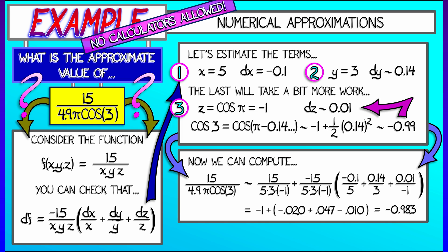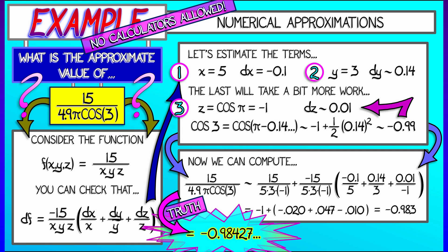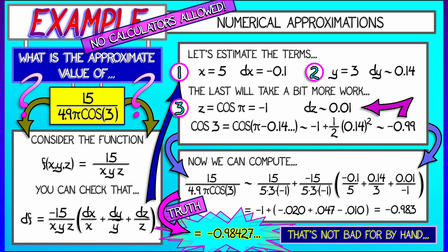What's the truth? The truth, according to the calculator, is minus 0.94 other stuff. This was good to the first two digits after the decimal point. That's really great, given that we did a bunch of estimates along the way that only held two digits of accuracy. That's not bad for doing things by hand. Very nice.